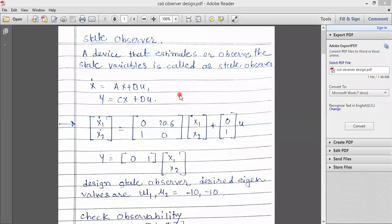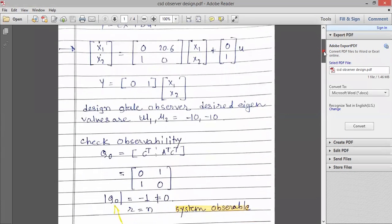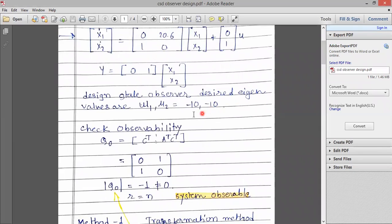To understand this, here we consider one example having the ABCD matrix. So this is the given A matrix, B matrix, and C matrix. The question is to design a state observer for the design eigenvalues that is minus 10 and minus 10.